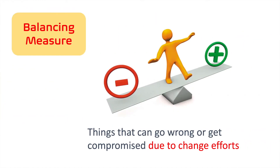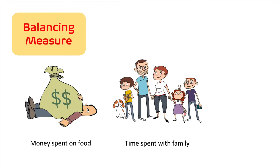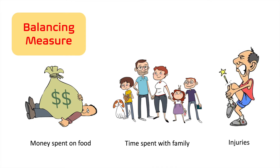You also need balancing measures. These are things that can go wrong or get compromised due to your change efforts. Perhaps eating healthy is costly and can break your budget. Daily exercise is reducing time spent with the family. Or injuries that can happen from exercise. These are the undesirable effects that you want to be mindful of and manage along the way.